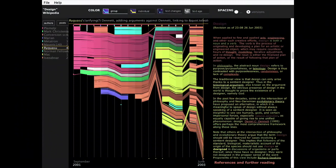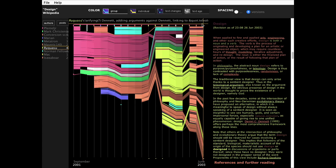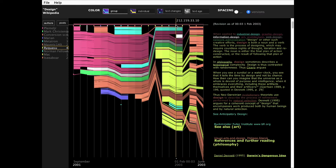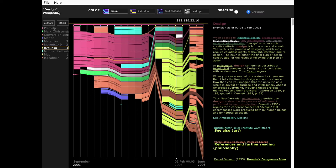So this is History Flow, and we're visualizing the history, the evolution of the article on design. Here on the left, you can see the list of people who have edited this article. In the middle are all the versions, and on the right, you see the text. I also have a magic wand that I can move around, and as I move around, you can see the text on the right changing. And I can scroll up and down, and I can just take a look that way.